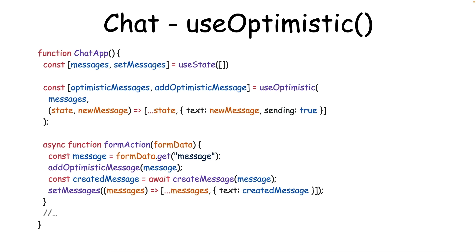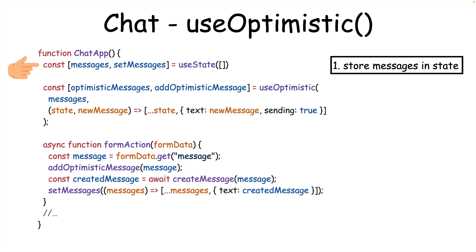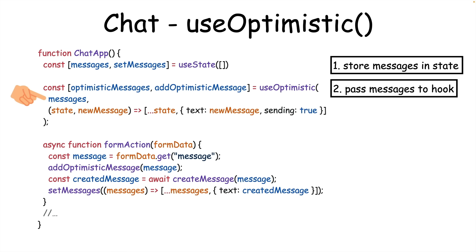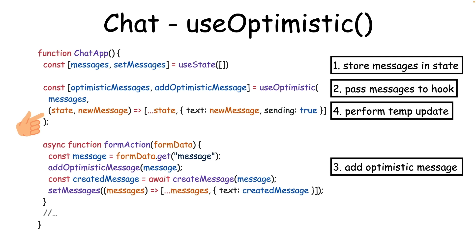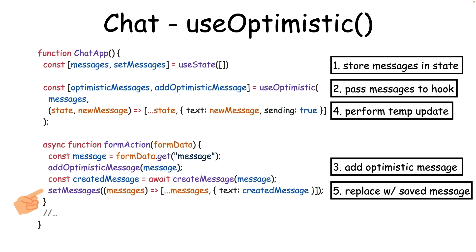To add this functionality, you would first create a separate piece of state for your messages, and then pass that state to the useOptimistic hook. Within the action, you then perform an optimistic update — this is a temporary update to add the new message to state while you're waiting on the server's response. And when it comes back, you can replace the temporary client state with your actual server state.